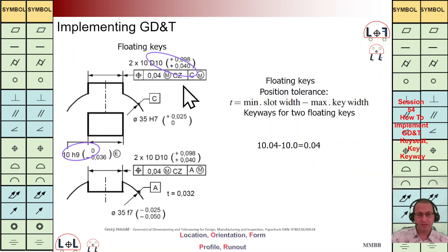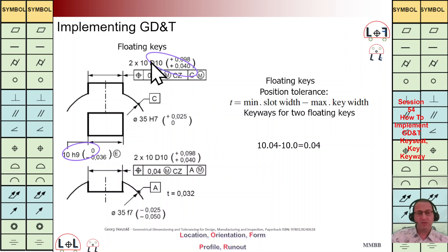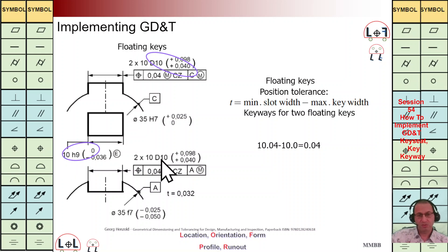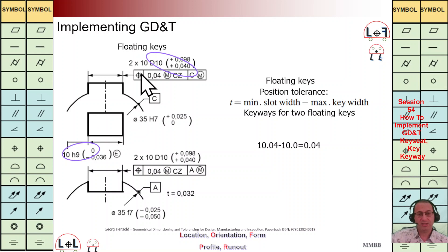Here I have this example from this reference. We are going to have two floating keys — we can see the width of this key is 10. Based on this floating key standard we should use D10, and we need to calculate what TZ for positioning should be — specifically, what is the clearance between key and key slots.